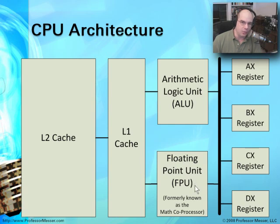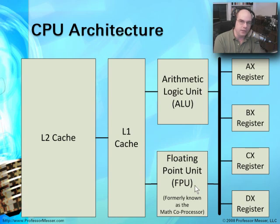The ALU performs functions and calculations, and the FPU works along with it. If you're accustomed to older systems back in the 286 and 386 days, you may recall something called a Mathco processor — a separate processor you would purchase and install onto your motherboard. These days, the ability to do floating point calculations is already integrated into the CPU itself. You don't have to purchase a separate Mathco processor any longer.